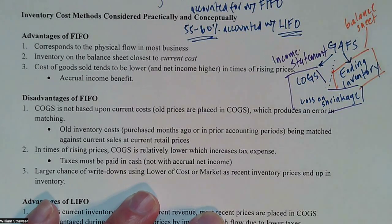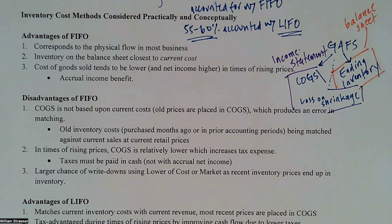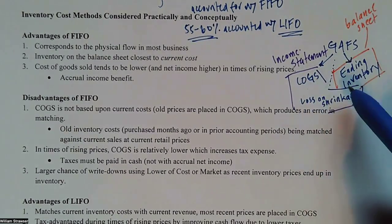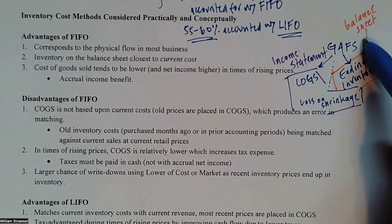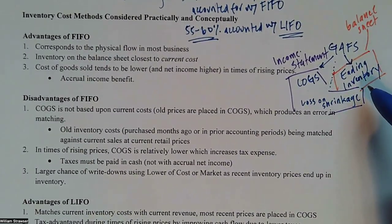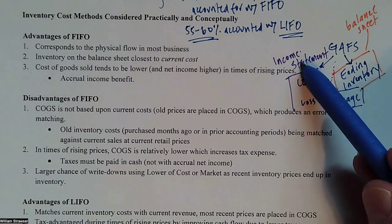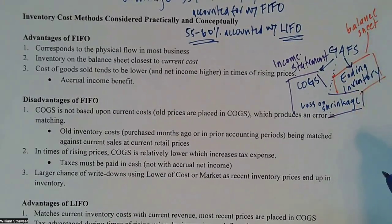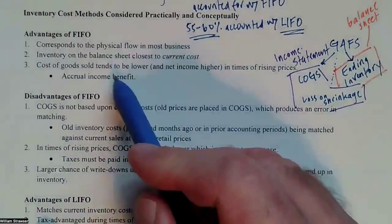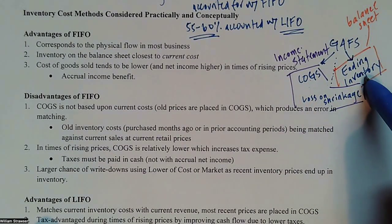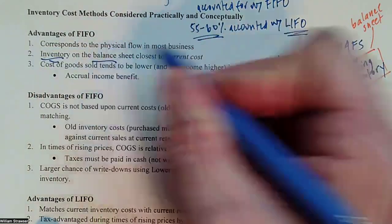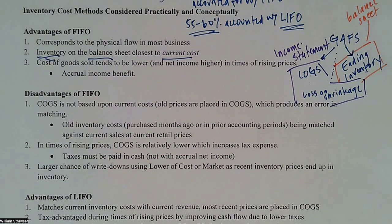Depending on what you're assigning to cost of goods sold — under FIFO you're assigning old prices to COGS, so your most recent costs end up on the balance sheet in the inventory account. Under LIFO, you put the most recent costs into COGS, and your oldest costs end up in ending inventory on the balance sheet. So with FIFO, the inventory on the balance sheet gets closest to the current costs.